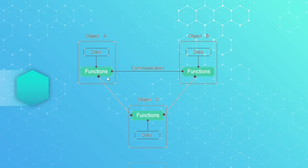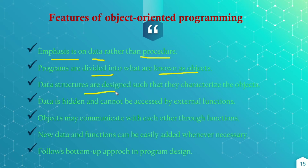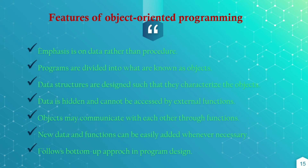This is the paradigm of OOP — object A and object B — every object can have data and functions, and they communicate through functions only. OOP emphasizes data rather than procedures. Programs are divided into parts called objects. Data structures are designed to characterize those objects. Data is hidden and cannot be accessed by external functions. Objects communicate with each other through functions only. New data and functions can be easily added whenever necessary. And it follows the bottom-up approach in program design.